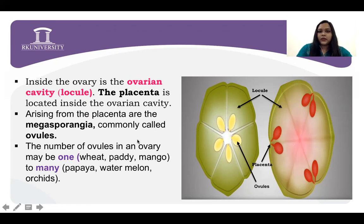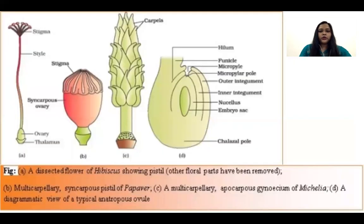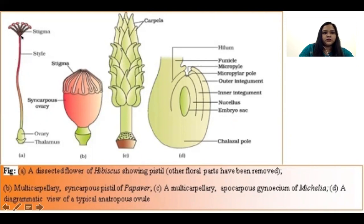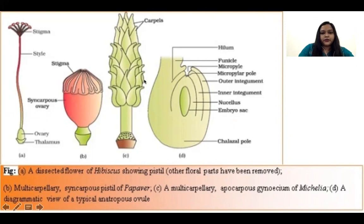In your 12th NCERT this figure is given, basically demonstrating your pistil containing stigma, style, and ovary. Here is the thalamus. This is an example of syncarpous — the ovary is fused. Here is the example of apocarpous ovary — you can see these ovaries are not fused, they are free. Here is an example of anatropous ovule.